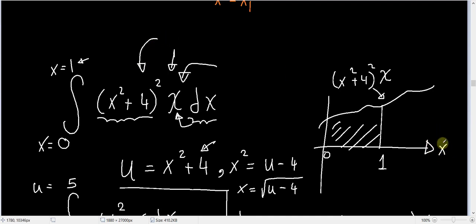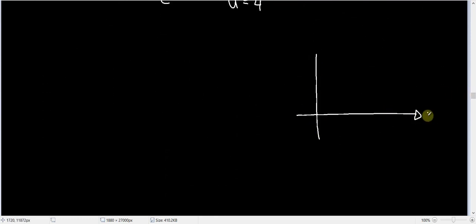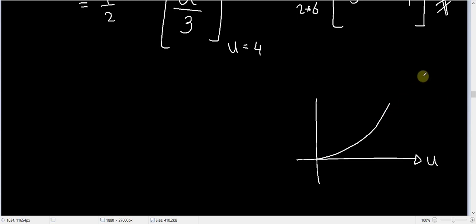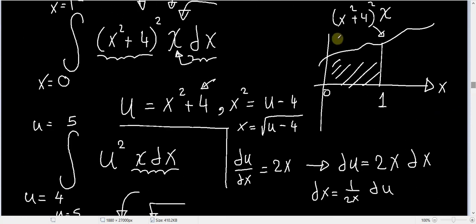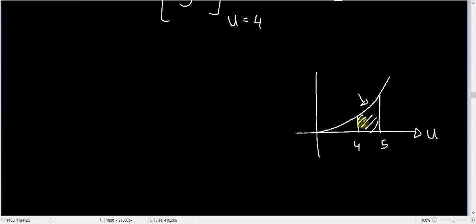Here I have x, evaluating the area from 0 to 1. I transformed this into a simpler integral where I have u on the axis instead, evaluating (1/2) u² from u = 4 to u = 5. While the two curves are not similar to each other, the area under the x-curve from 0 to 1 is equal to the area under the u-curve from 4 to 5.